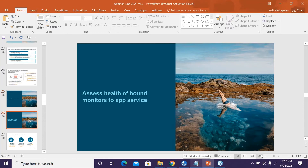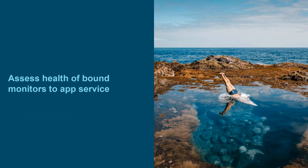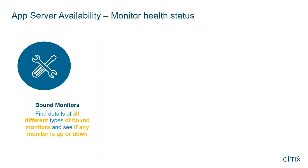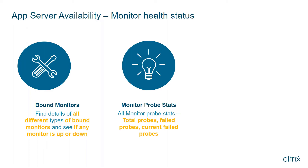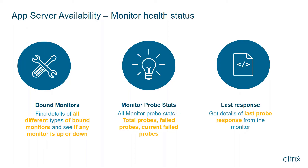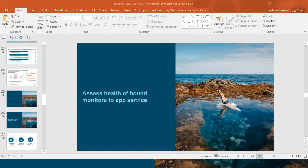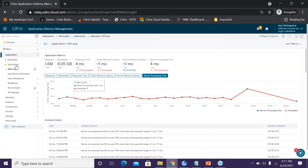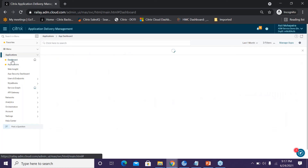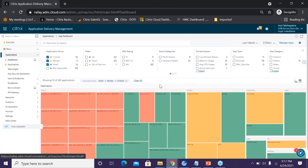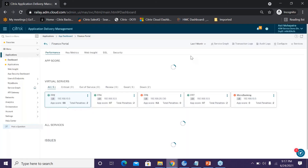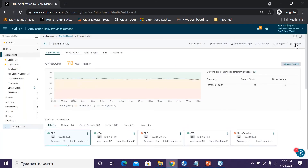The second use case is ADM helping you assess the health of bound monitors on your app services — understanding which types of monitors are bound and whether any monitor is up or down. You can define different monitor types: ping, TCP, HTTP, and even database-level monitors. ADM gives statistics including total probes, failed probes, current probes, and details of the last probe response.